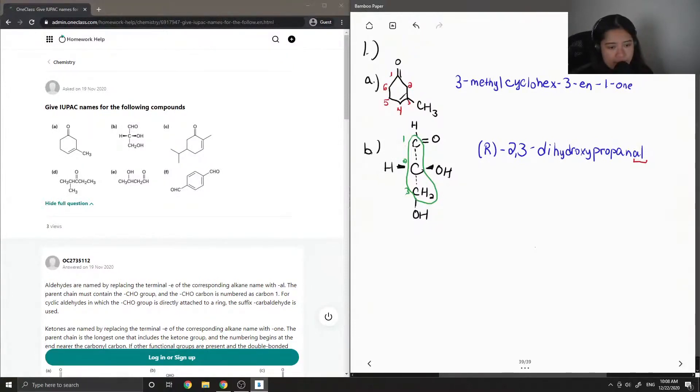And then propanal. This compound ends in al, which tells us there's an aldehyde group. Notice we don't have to say one al. It is just assumed that carbon 1 is the one that has the aldehyde. So this compound is (R)-2,3-dihydroxypropanal.